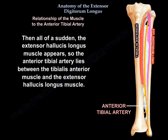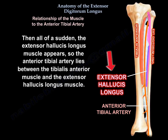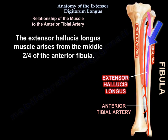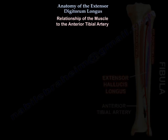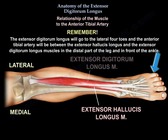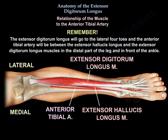Then, all of a sudden, the extensor hallucis longus appears, arising from the middle two-fourths of the anterior fibula. So the anterior tibial artery then lies between the tibialis anterior muscle and the extensor hallucis longus muscle. The extensor hallucis longus crosses the leg medially to reach the big toe, while the extensor digitorum longus goes to the lateral four toes. The anterior tibial artery lies between these two muscles — the hallucis and the digitorum — in the distal part of the leg and in front of the ankle.